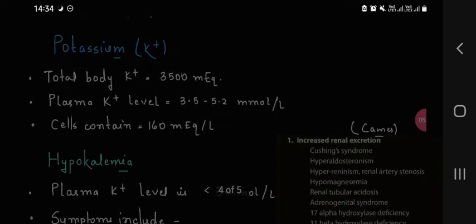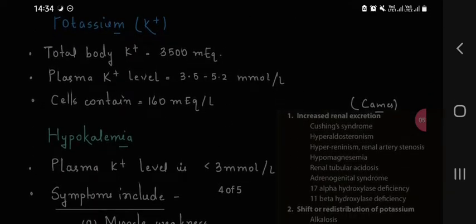Potassium. Total body potassium is 3500 mEq. Total potassium level is 3.5 to 5.2 mmol per liter. Cells contain 160 mEq per liter. We can say that potassium is mainly present inside or ICF.